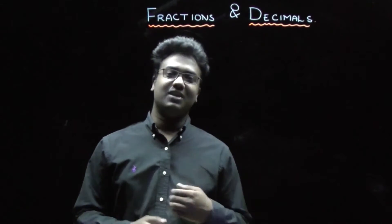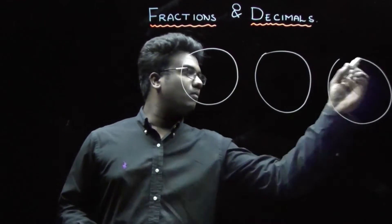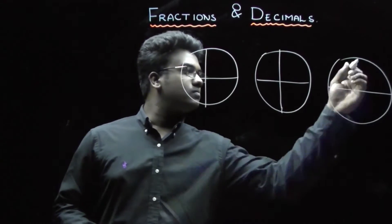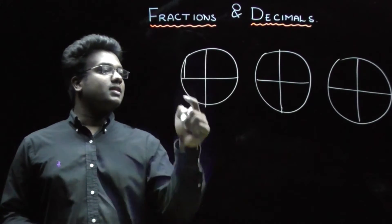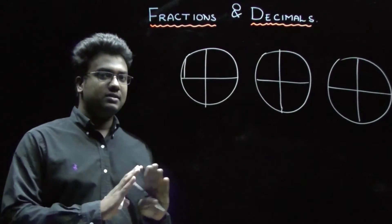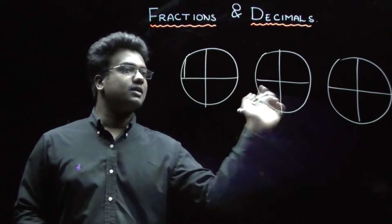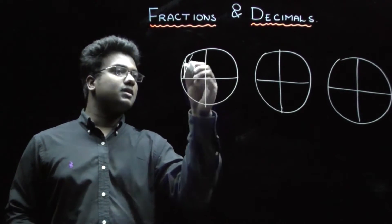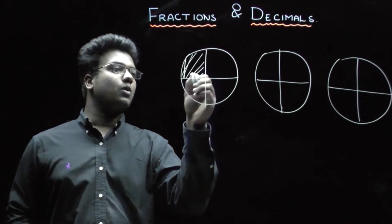Now, we are going to discuss about the division of fraction. If you observe here, these are the three equivalent circles. And these all three equivalent circles are being divided into four equal parts. Each circle has been divided into four equal parts.